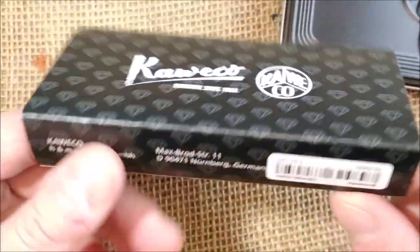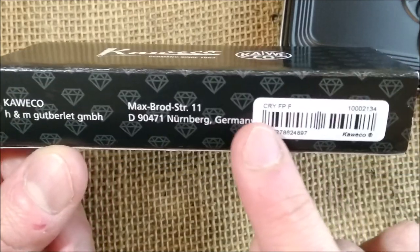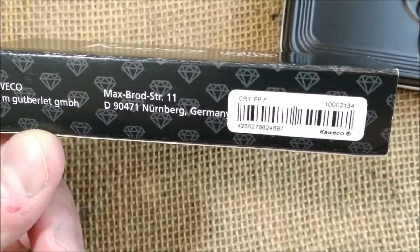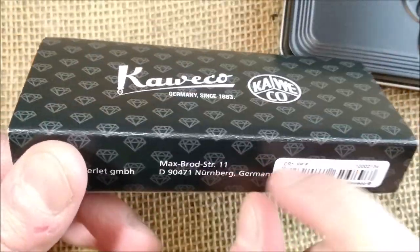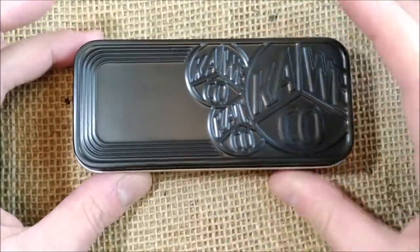It could be a regular Kaweco sleeve and then you can see there Crystal Fountain Pen F. This is the usual label that usually comes in that little pen wrap made of plastic.